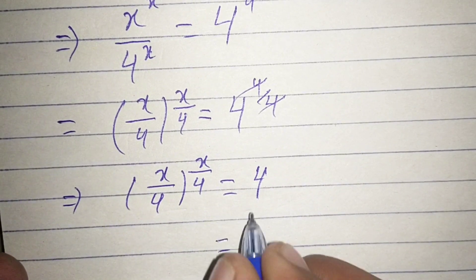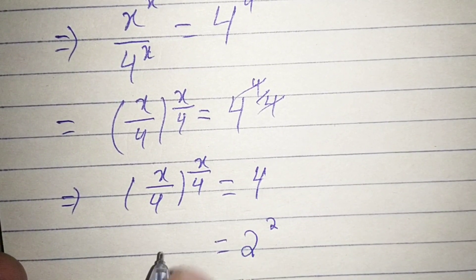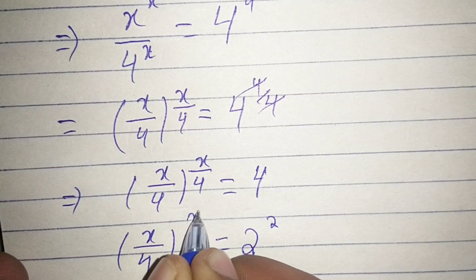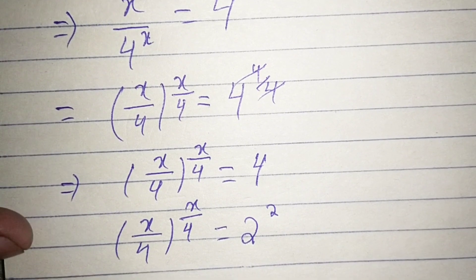So we can write 4 as 2 to the power 2. So x by 4 whole to the power x divided by 4 equals 2 to the power 2.